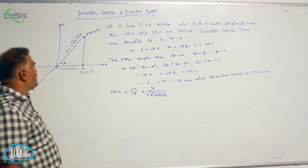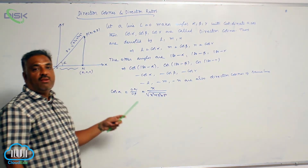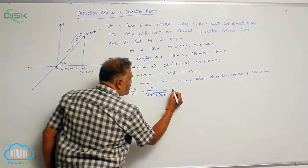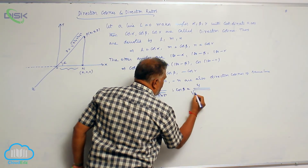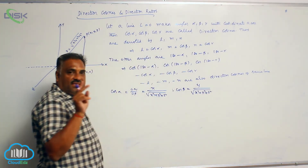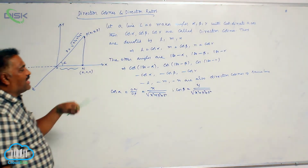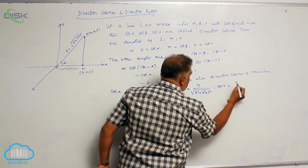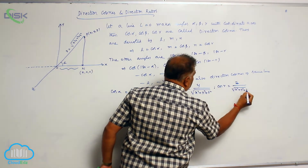In the same fashion, if you drop point P onto the y-axis, it becomes (0, y, 0), so cos beta = y / √(x² + y² + z²). Similarly, dropping P onto the z-axis gives cos gamma = z / √(x² + y² + z²).